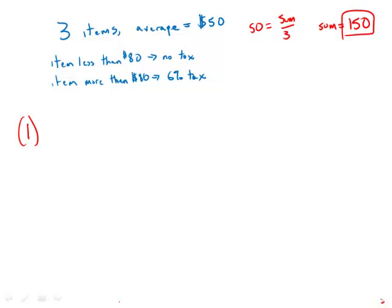Statement number one tells us the most expensive item, the max, is $100. Well, the max is $100, that means the other two items together are $50 because you spent $150 total. So $50 for two items means each one has to be lower than 80. So there's no tax on these, there's only tax on the $100, and we could calculate that.